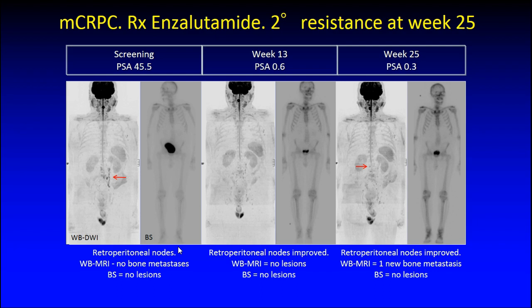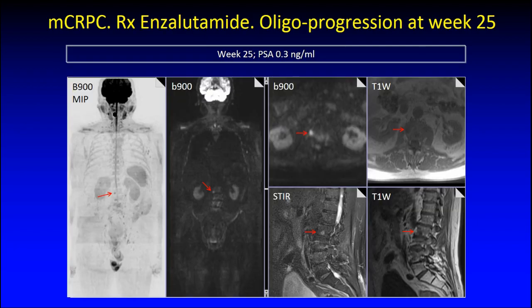Here is an example of somebody with castrate-resistant prostate cancer being treated with a targeted therapy called enzalutamide. At baseline we have a whole body MRI scan and a bone scan. The whole body MRI scan demonstrates the presence of retroperitoneal lymph nodes and no bony lesions. At week 13 the PSA is now well suppressed below 1 and the retroperitoneal lymph nodes have improved. At week 25, oligoprogression occurs — we can see a small dot confined to a particular vertebral body which we fail to detect on the bone scan.